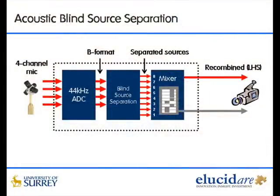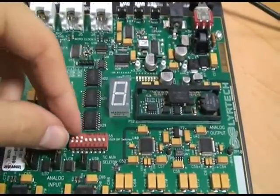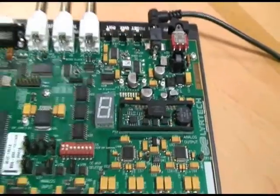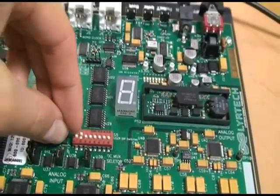The source separation algorithm is capable of localizing sources as well as isolating them. In the following demonstration, the audio you are listening to is from the video recorder's left-hand side — that is to say, the separated sources have been recombined. As you can hear, it's virtually impossible to discriminate between one speaker and another.